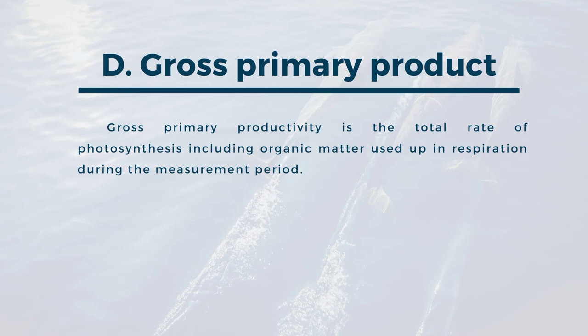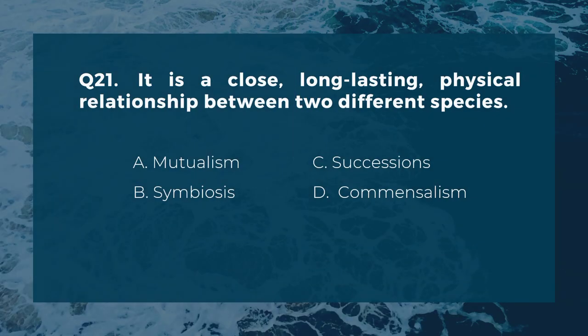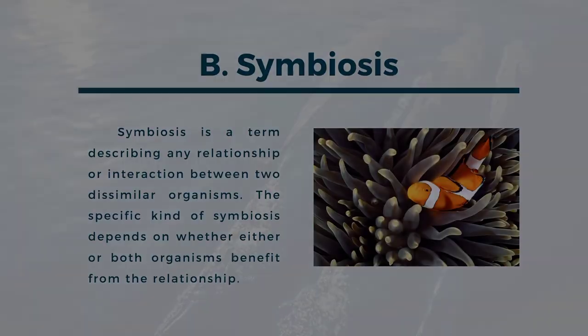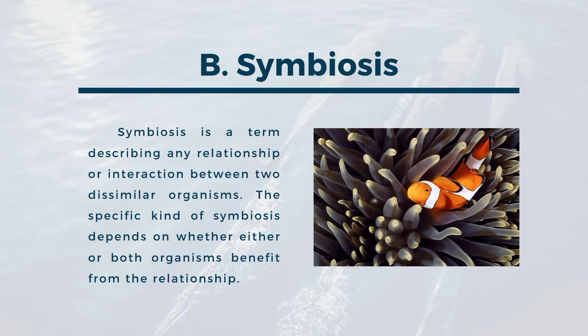Question twenty-one: it is a close, long-lasting physical relationship between two different species. A) mutualism, B) symbiosis, C) succession, D) commensalism. The correct answer is B, symbiosis. Symbiosis is a term describing any relationship or interaction between two dissimilar organisms; the specific kind of symbiosis depends on whether either or both organisms benefit from the relationship.